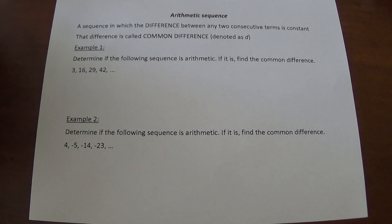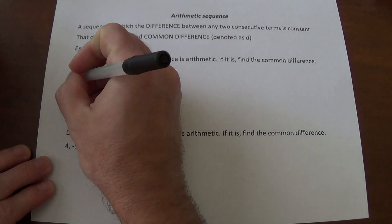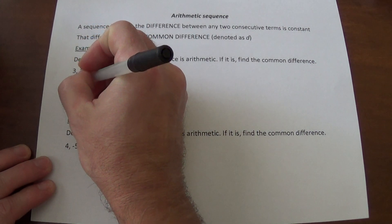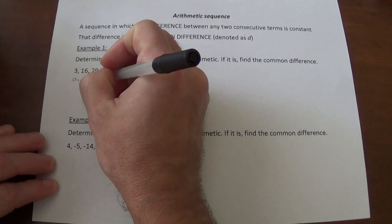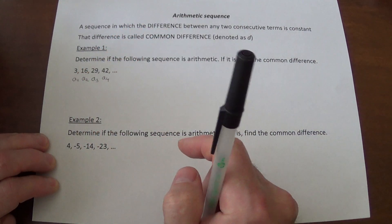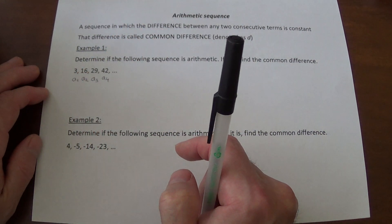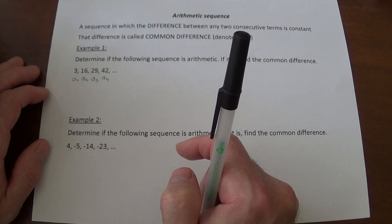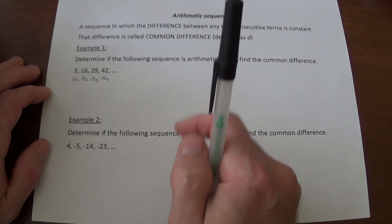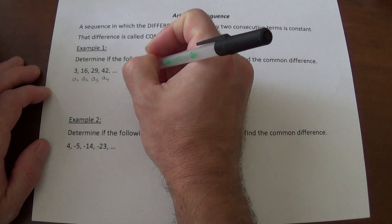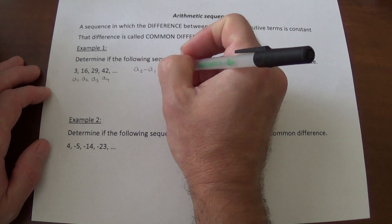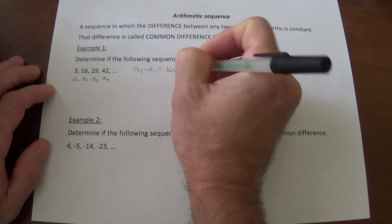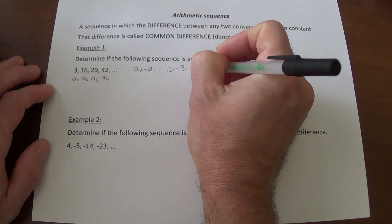What we need to do is understand that this is our first term, this is our second term, this is our third term, and this is our fourth term. We need to determine if the difference between consecutive terms is going to stay the same. So we take the difference between the second term and the first term, which is 16 minus 3, and that is 13.